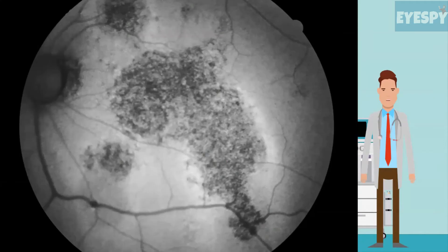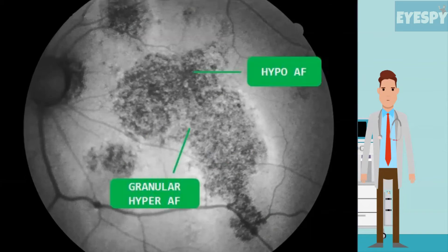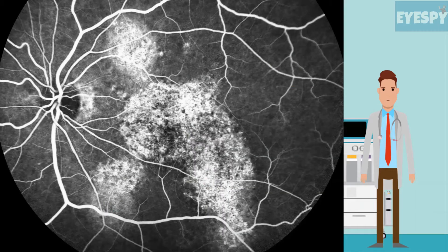FAF is a non-invasive modality used to assess the function of RPE in CSCR. This patient shows hypoautofluorescence in areas of RPE atrophy and granular hyperautofluorescence in areas of elongated photoreceptor outer segments.